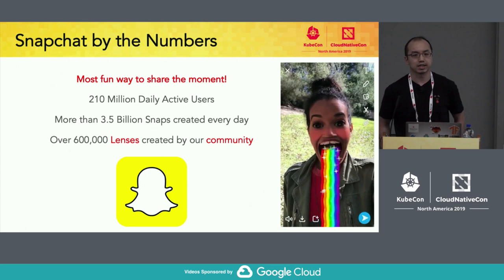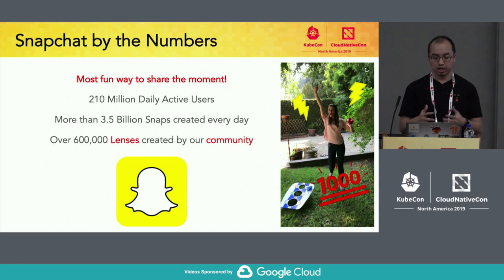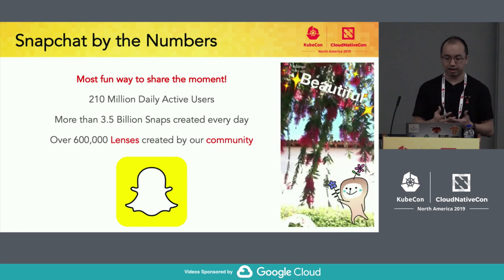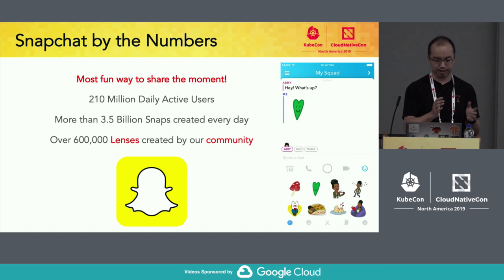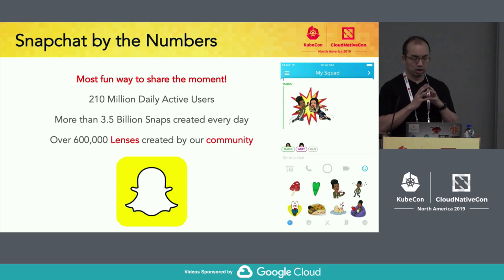First, about Snapchat. Our app has been around for eight years. We consider ourselves to be the most fun way to share the moment whenever you want to do so. At the end of Q3, we have over 210 million daily active users, with more than 3.5 billion snaps created every day and shared with your friends. We also have over 600,000 lenses created by our community.